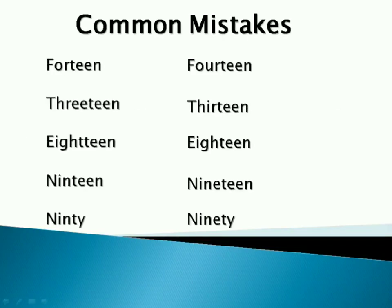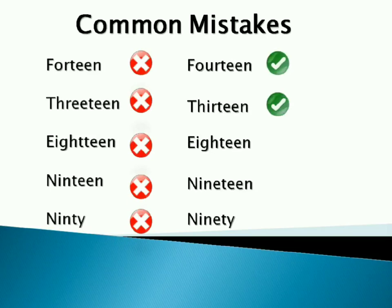These are some common mistakes which we normally do while writing numbers. So can you guess which one is correct and which one is wrong? Think a while. The first column is wrong. The correct ones are 14, 13, 18, 19, 90.